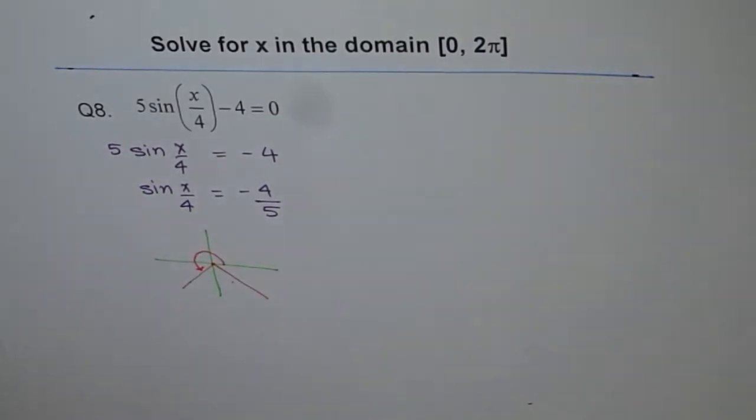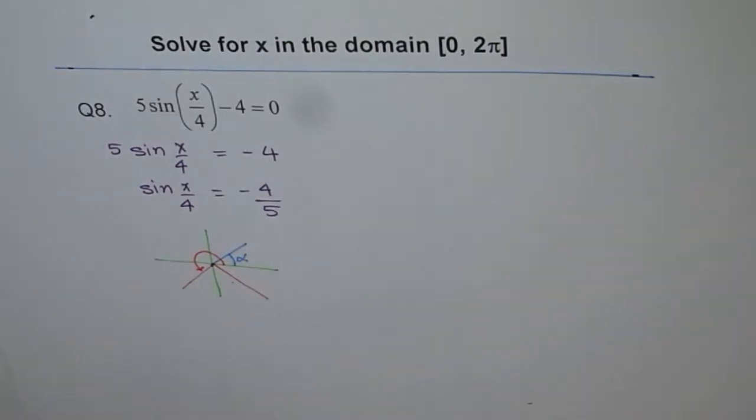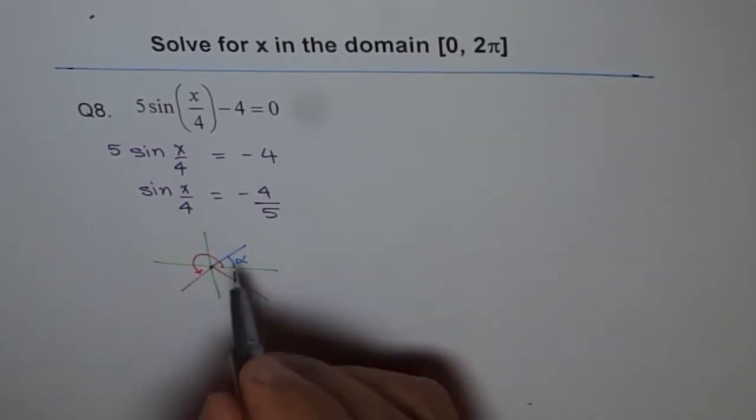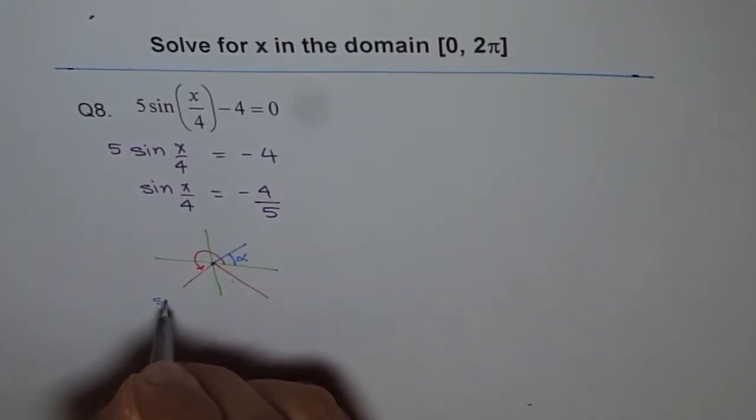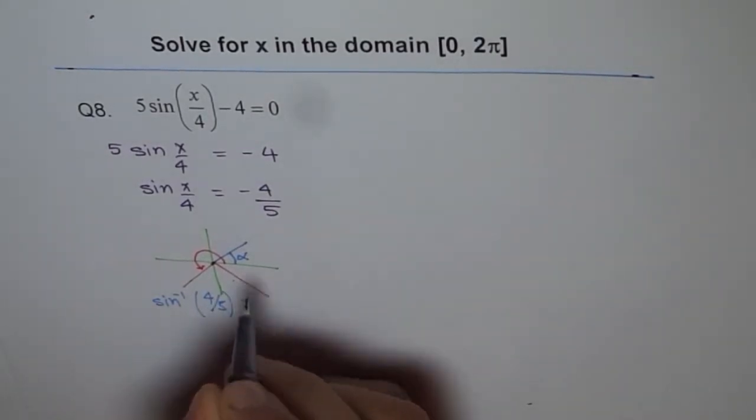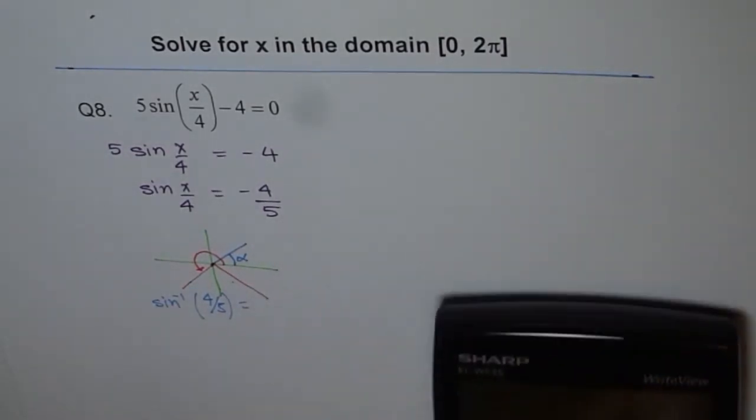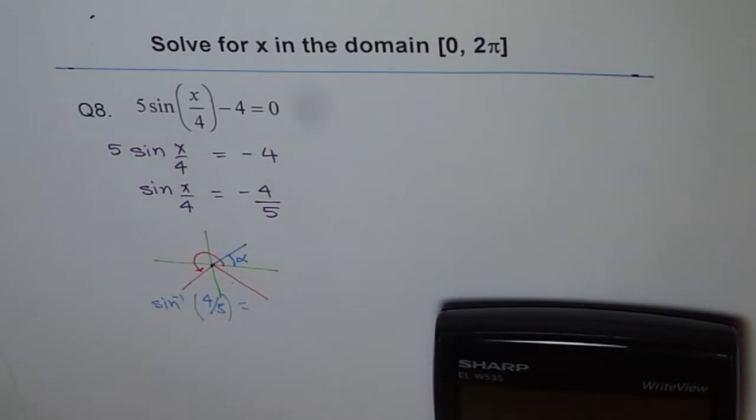So first let's find out our related acute angle, this alpha. The related acute angle will be sin inverse of 4/5. We will consider the negative sign later. First let's find the related acute angle, so sin inverse of 4 divided by 5.